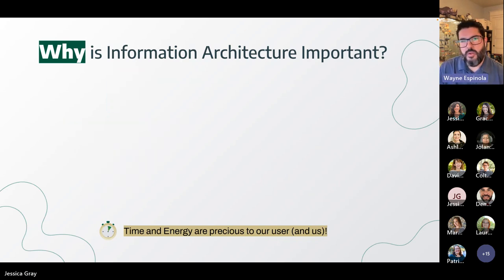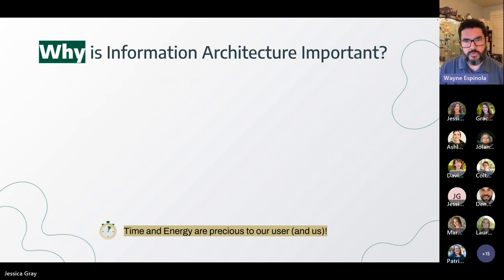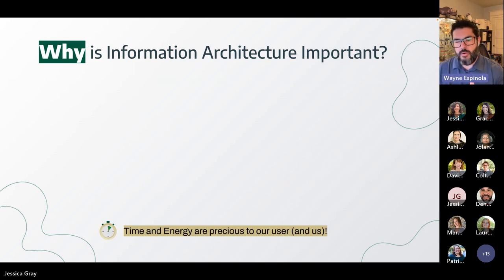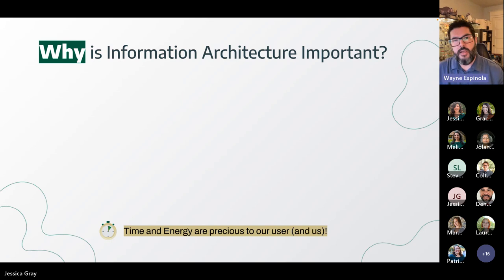So why is this important? Time and energy are probably our most precious commodity, and our users are no different. If we're making something too complicated or it's too slow to find information, our visitor is probably going to get frustrated and abandon the site, and in the future they're less likely to come back. Information architecture helps get users to the information they need and the tasks they need to accomplish — it's the backbone of the user experience.